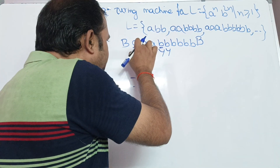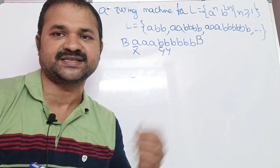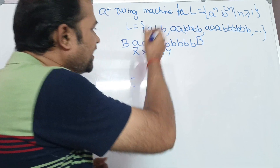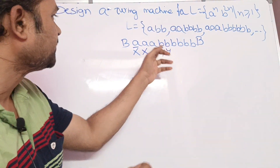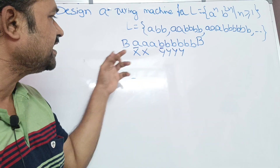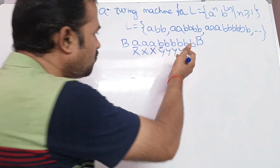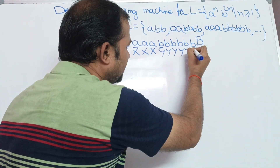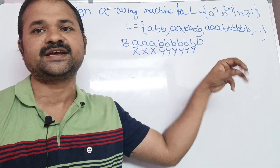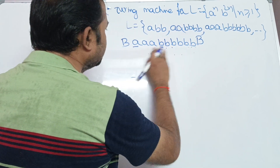For the first A we now have X, and the corresponding 2 B's are replaced by 2 Y's. Then come back — move towards the left until we get X. Replace the next A by X, move right until we get Y, then replace those 2 B's by 2 Y's. Move left till we get X, replace the third A by X, move right to Y, replace the next 2 B's by Y's. When we see blank space, the string is accepted by the Turing machine.